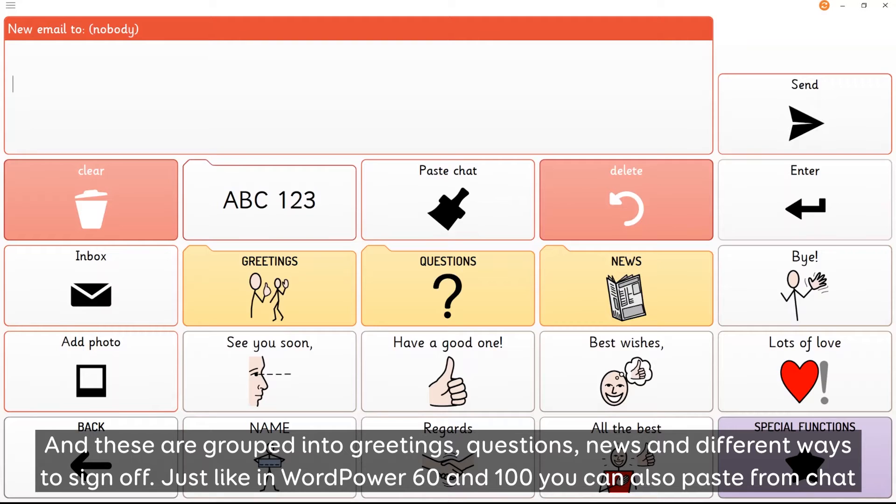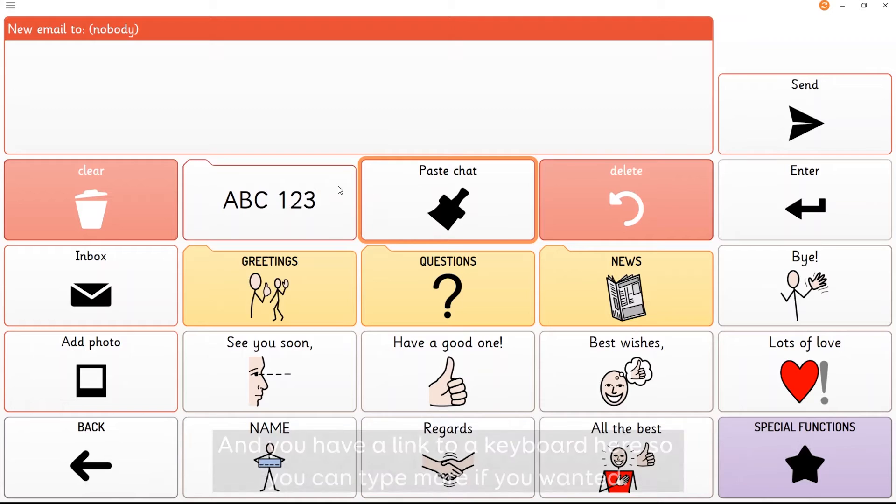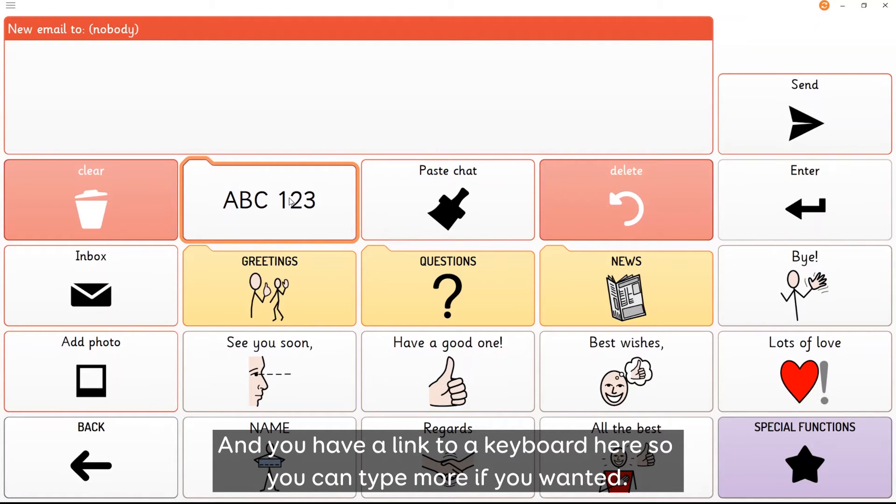Just like in word power 60 and 100 you can also paste from chat using this cell here which means adding in any text that you've written using the rest of your grid set to your email or text. And you have a link to a keyboard here so you could type more if you wanted.